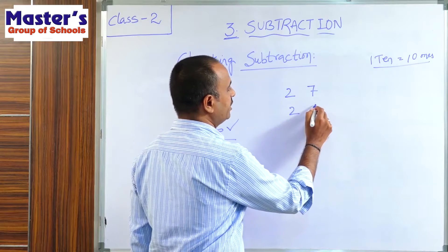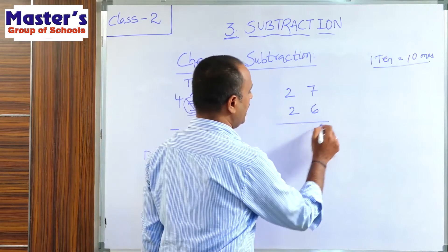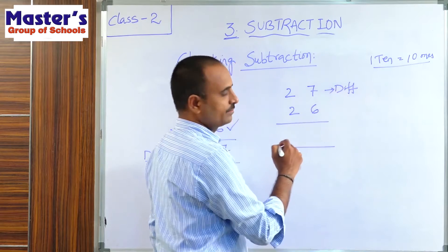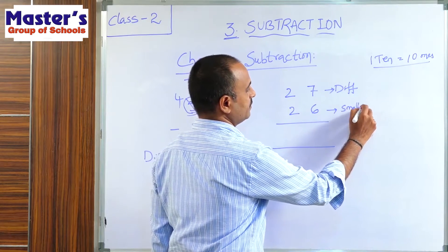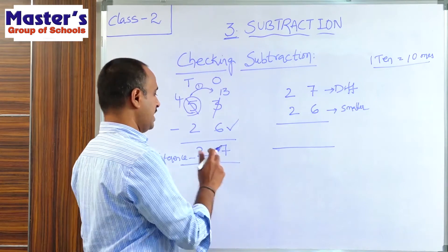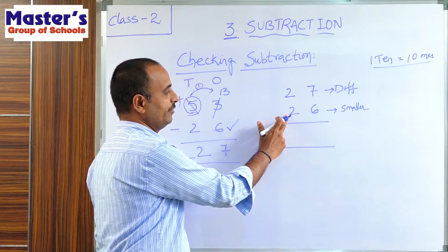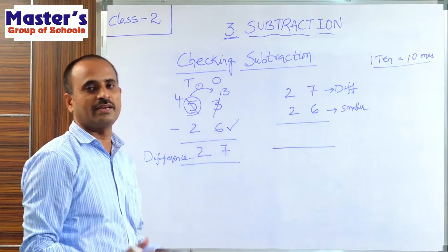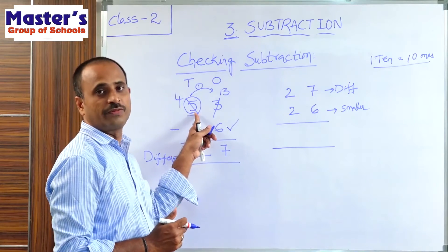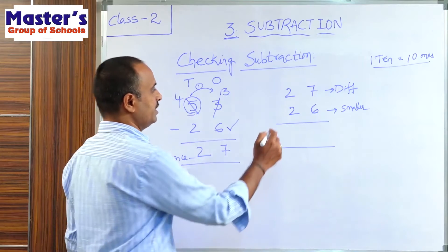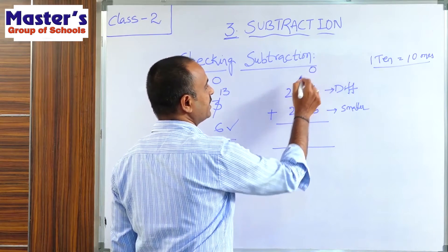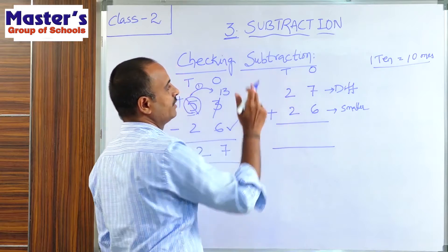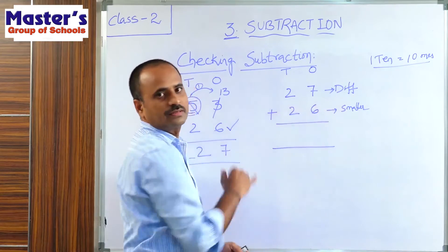26 is the smallest number in the subtraction, so write 26 below the difference. Now add these two numbers — the first is the difference and the second is the smaller number. Add the difference to the smaller number, and we have to get the greater number in the subtraction. If we get 53, our subtraction is correct; if we do not get 53, our subtraction is wrong.